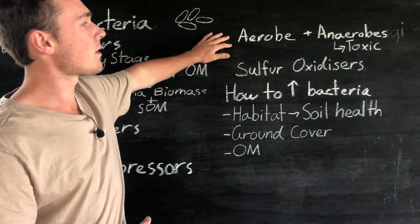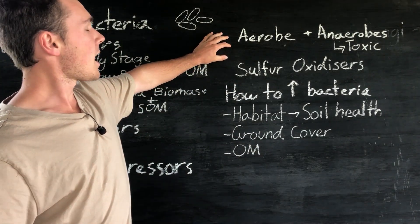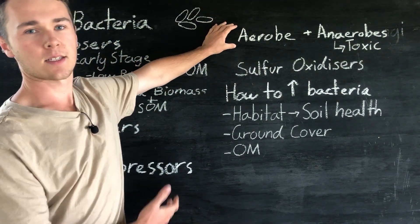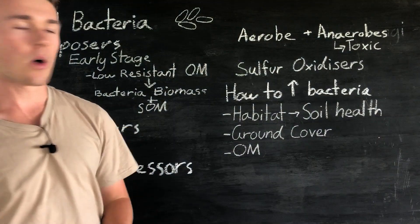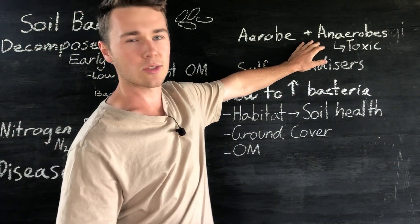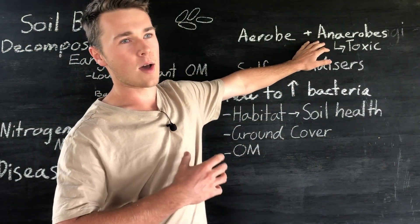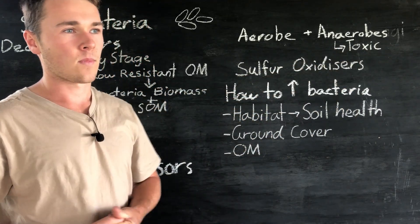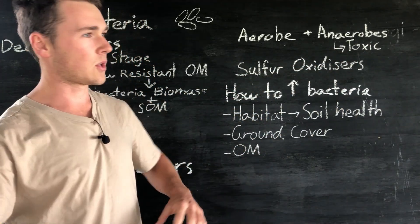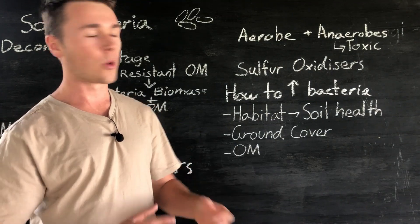Next we have aerobic and anaerobic bacteria. Pretty much all that these ones are, these are bacteria that live in the presence of oxygen whereas these ones don't like oxygen. So when our soils become lacking in oxygen because of any compaction or they're waterlogged,